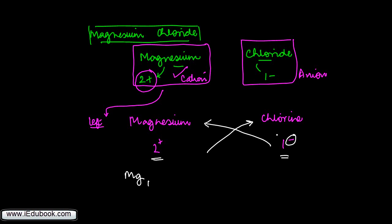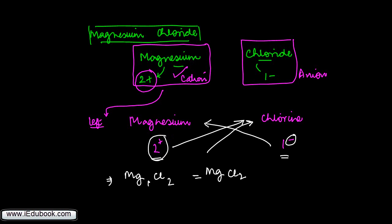Because ultimately the negative and positive are going to cancel each other. The second element is chlorine — pronounced as chloride when it forms an ion — and it takes over the valency of magnesium through a crossover. So the formula of this ionic compound will be Mg₁Cl₂, or simply MgCl₂ — we just ignore the subscript of one.